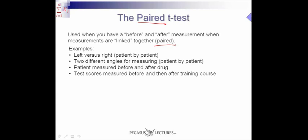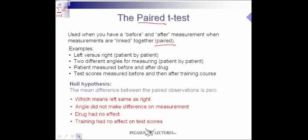Or perhaps we're looking at a drug and its effects — we measure the patient before the drug and then after the drug. Again, these measurements are paired: same patient, a sample before and afterwards. Or we could be looking at test scores measured before and then after a specific training course. Now, we're going to use the null hypothesis to determine whether or not the distributions of the means are the same. The null hypothesis says there was really no effect. So the null hypothesis for a t-test means that the mean difference between the paired observations is zero — there's no difference.